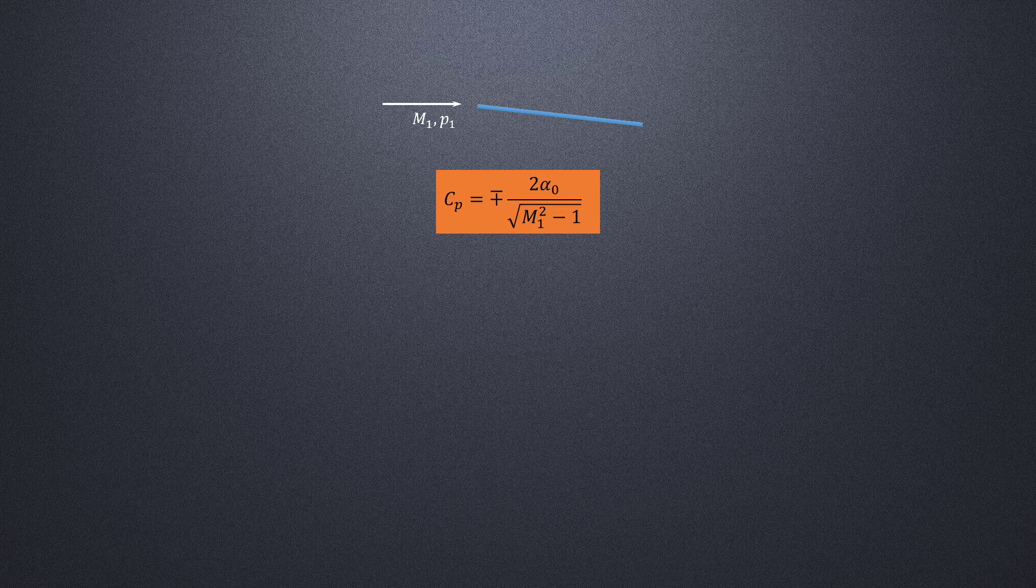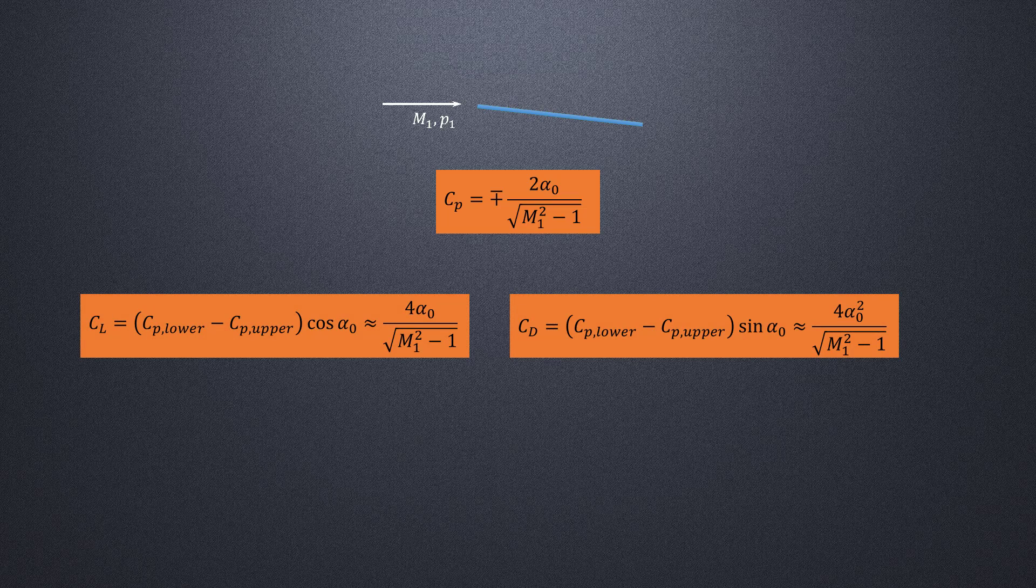Subsequently, the lift and drag coefficient can be calculated using the formula shown here. Note that we are assuming the angle of attack to be small enough such that cosine of alpha is equal to 1 and sine of alpha is equal to alpha.